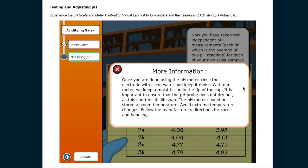Once you are done using the pH meter, rinse the electrode with clean water and keep it moist. With our meter, we keep a moist tissue in the tip of the cap. It's important to ensure that the pH probe does not dry out, as this shortens its lifespan. The pH meter should be stored at room temperature. Avoid extreme temperature changes. Follow the manufacturer's directions for care and handling.